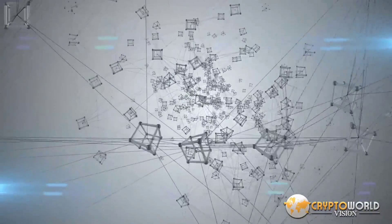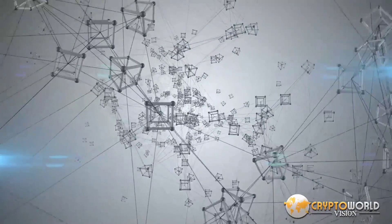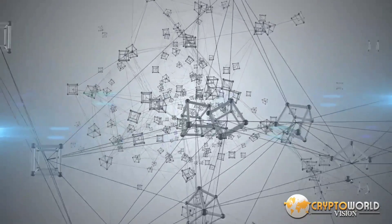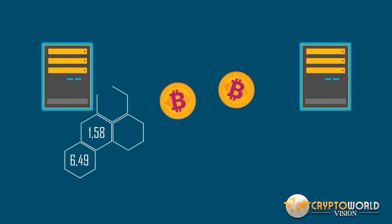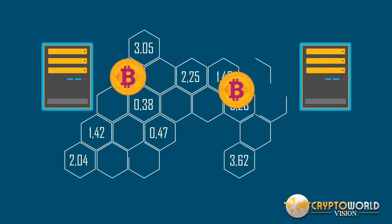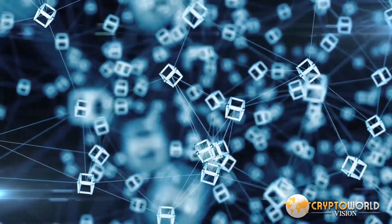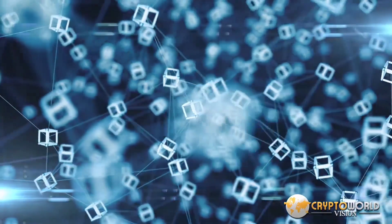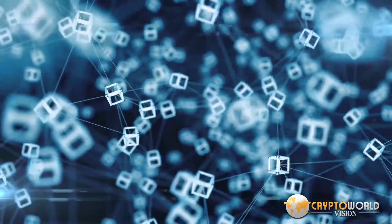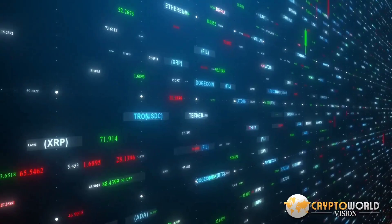Blockchain is a shared, immutable ledger that facilitates the process of recording transactions and tracking assets in a business network. An asset can be tangible — a house, car, cash, land — or intangible: intellectual property, patents, copyrights, branding. Virtually anything of value can be tracked and traded on a blockchain network, reducing risk and cutting costs for all involved.